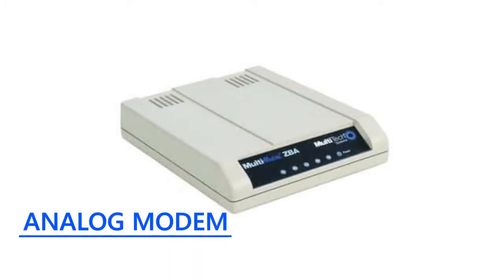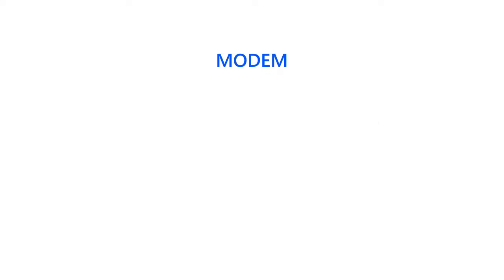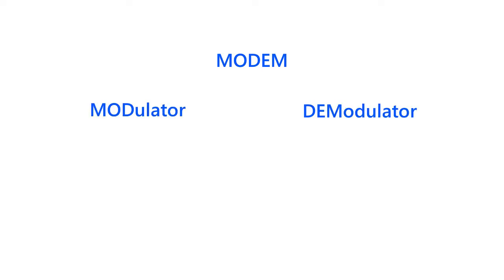Analog modem. An analog modem is a modem used for synchronous transmission of data over plain old telephone service lines. The word modem stands for modulator demodulator, which refers to the fact that modems convert digital transmission signals to analog signals and vice versa.